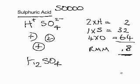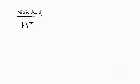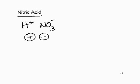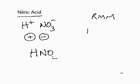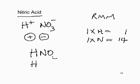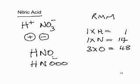Nitric acid, HNO₃: the alternative name is hydrogen nitrate. It contains H⁺ and NO₃⁻ ions. One of each gives the formula HNO₃. For the RMM: 1 hydrogen = 1; 1 nitrogen = 14; 3 oxygens × 16 = 48. Total relative molecular mass of nitric acid: 63.